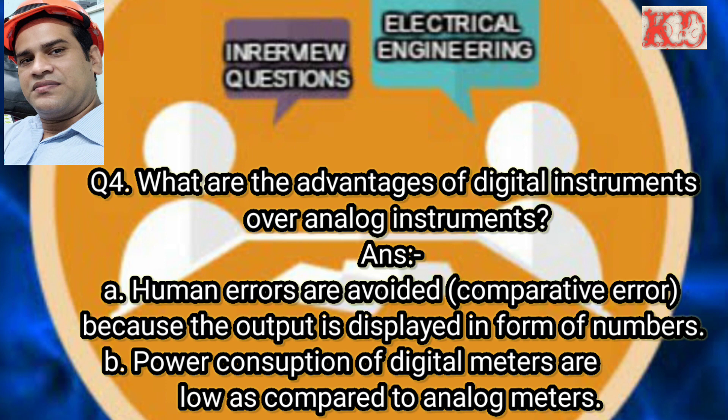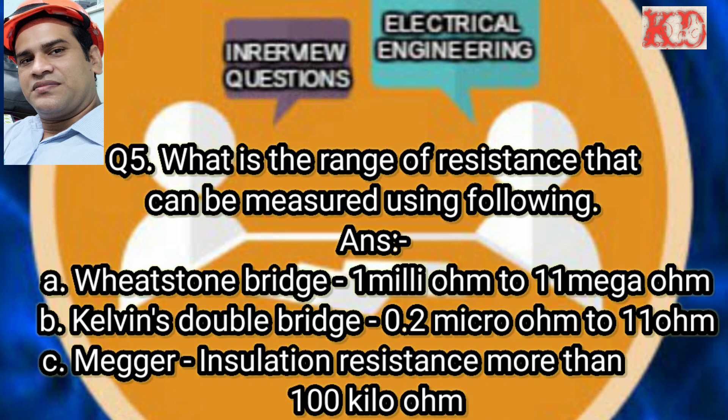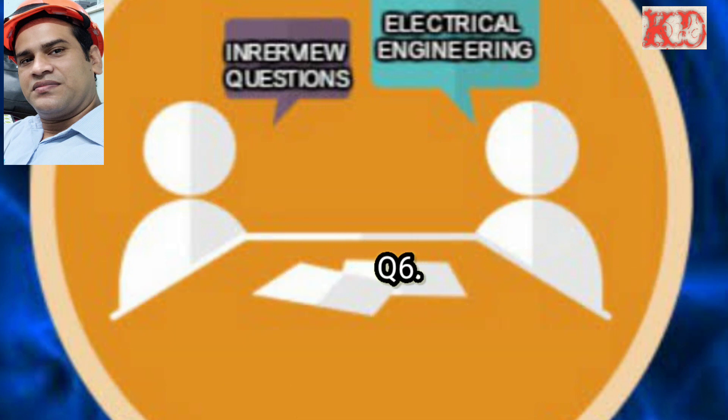Question number five: What is the range of resistance that can be measured using the following? Answer: first, Wheatstone bridge — 1 megaohm to 11 megaohm; second, Kelvin's double bridge — 0.2 microohm to 11 ohm; third, Megger — insulation resistance more than 100 kilohm.